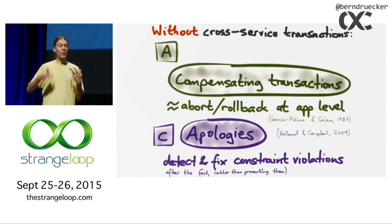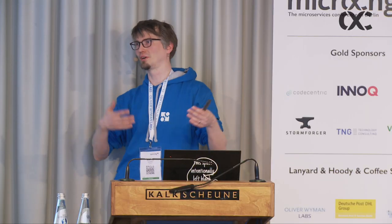Martin Kleppmann said: without cross-service transactions — without XA, without two-phase commit — you have two possibilities. You either do compensating transactions, which is a rollback at the business level, or you do apologies. Apologies are an interesting concept — you don't always have to prevent violating a constraint, you have to recognize it and apologize. The Amazon example: the website says an item is in stock, you order it, then they can't deliver and say sorry, here's a voucher. That could be a valid strategy.